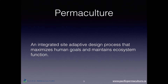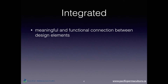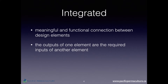To get a really clear understanding of what I mean by this definition, I'm going to take a deeper look into a couple of the key terms. The first is 'integrated.' Permaculture is a design process that integrates chosen elements in a way that's connected, meaningful, and functional. That means the outputs of one element are the required inputs for another, so things have actual functional relationships — not just things that are there.